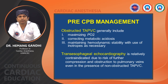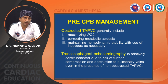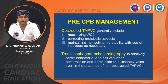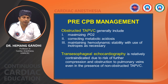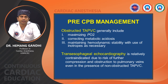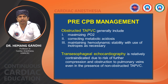Pre-CPB management is very important. Until the patient goes on cardiopulmonary bypass, for obstructive TAPVC, maximize FiO2, correct metabolic acidosis if present on ABG, and maintain hemodynamic stability with inotropes as necessary — commonly milrinone to control pulmonary artery pressures. Transesophageal echocardiography is relatively contraindicated due to the risk of further compression and obstruction of the pulmonary vein, even in non-obstructive TAPVC, so it is usually avoided in the pre-CPB period.